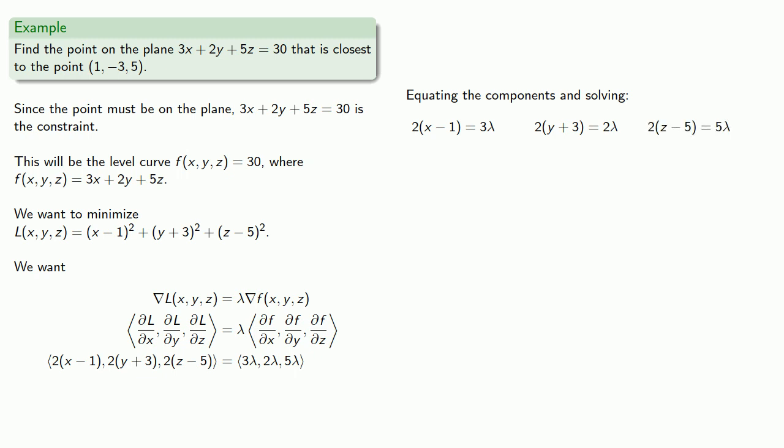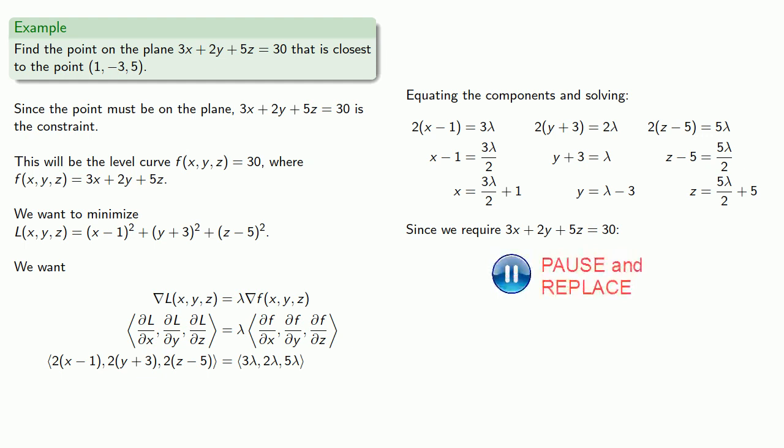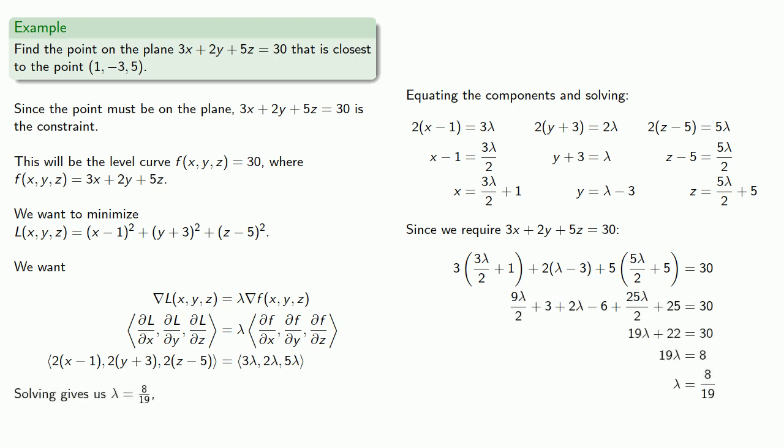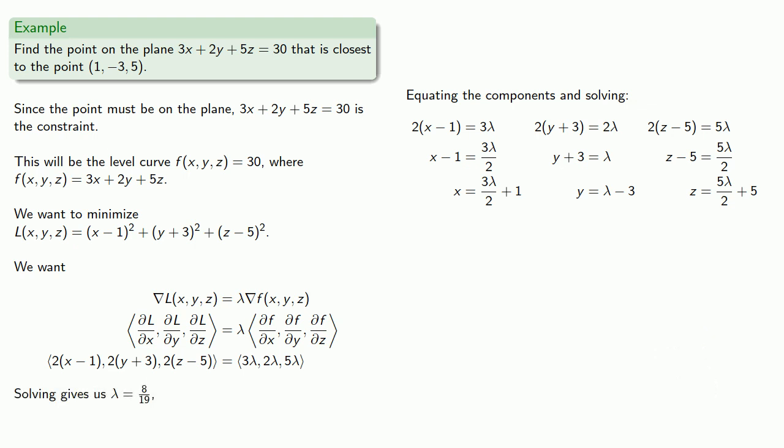And again, there's actually four unknowns here, so we need a fourth equation, and that comes from our constraint. Now since our constraint is linear in x, y, and z, we might actually want to solve these equations for x, y, and z. Replacing in the constraint equation, and we find a value of lambda, and once we have the value of lambda, we can find x, y, and z.